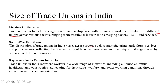Trade unions in India represent workers in a wide range of industries including automotive, textile, healthcare, and construction, advocating for rights, welfare, and better working conditions through collective actions and negotiations. Industries with a long history of unionization — manufacturing, automobiles, textiles, public sector undertakings, and organized service sectors — have a stronger union presence, whereas informal sectors have limited representation. Sectors like IT are coming up in terms of penetration and recognition.